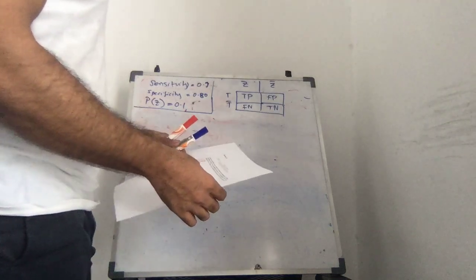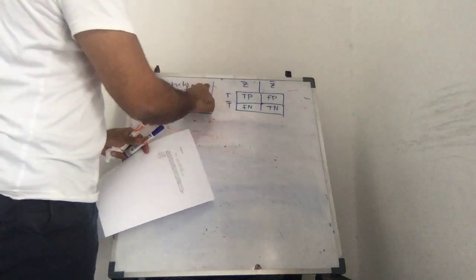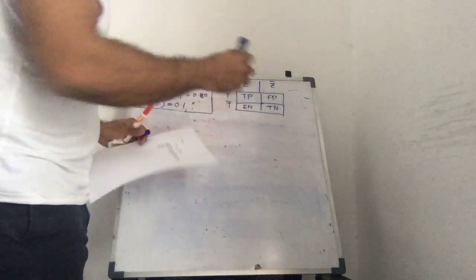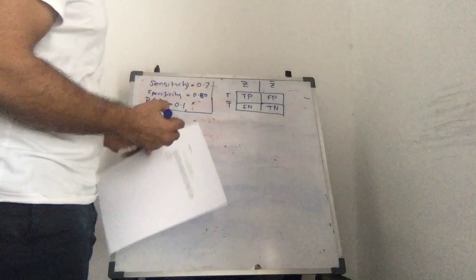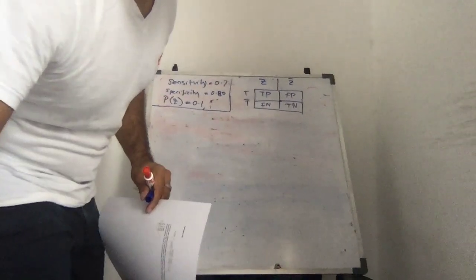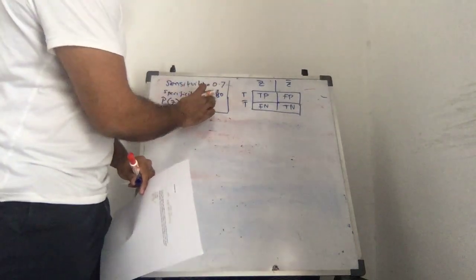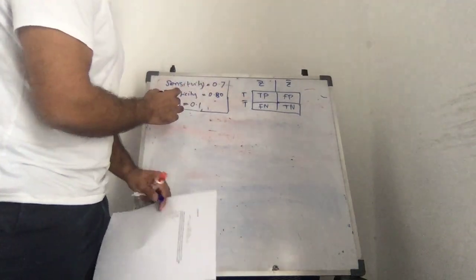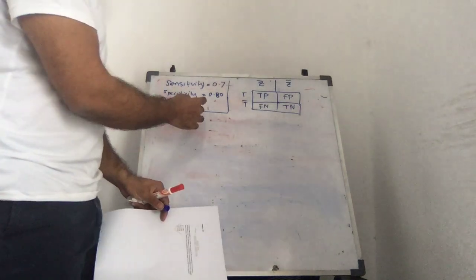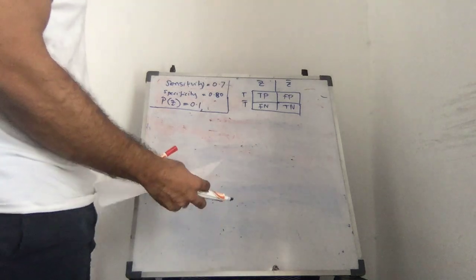A test to see whether you suffer from malaria, and we are given the sensitivity is 0.7. Hopefully you can see all this. It's not too blurry. 0.7. And then we have the specificity is 0.8. And we have the prevalence, which is probability of Z is 0.1, 10 divided by 100, right?